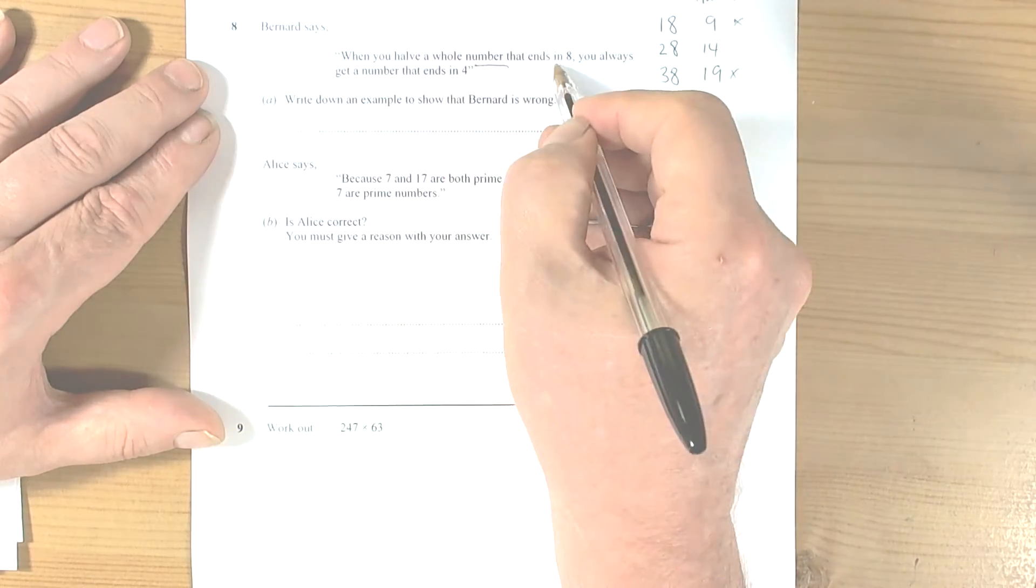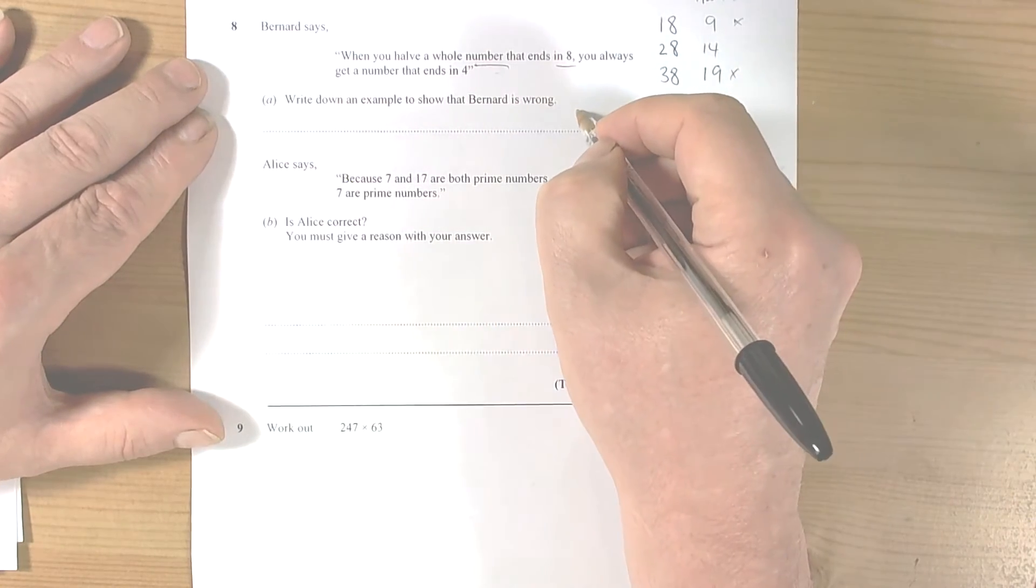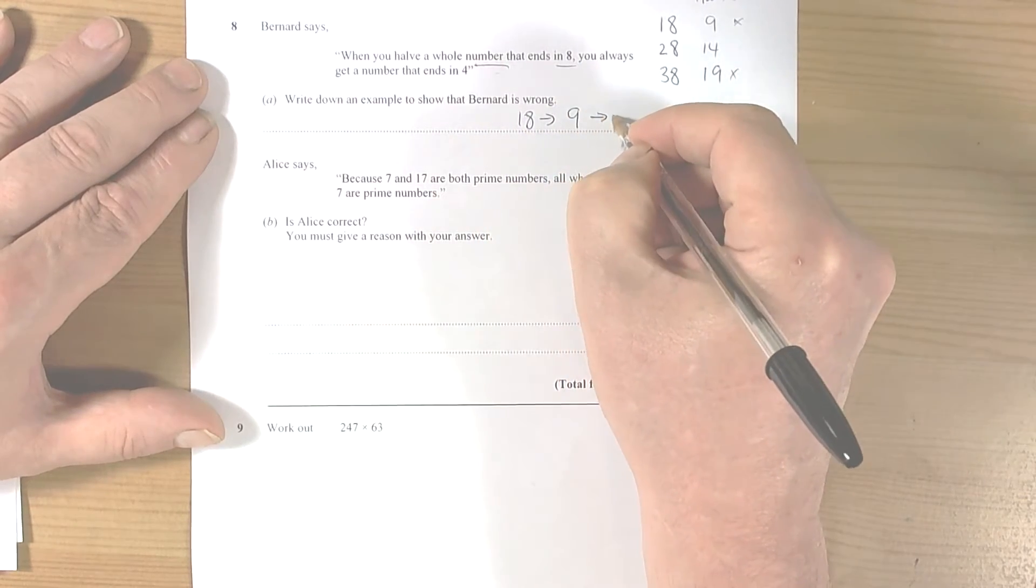So here then, write down an example to show Bernard is wrong. Well, we could have 18 that becomes 9.